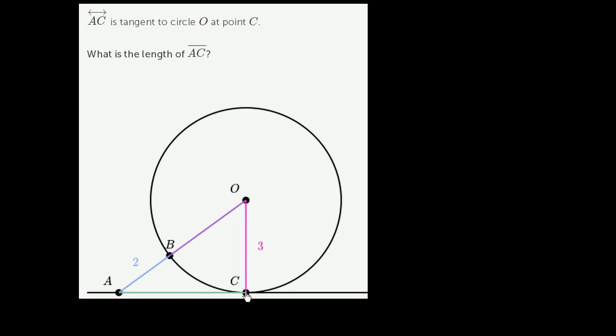The key thing to realize here: since AC is tangent to the circle at point C, it's perpendicular to the radius between the center of the circle and point C. So this is a right angle, and triangle AOC is a right triangle.